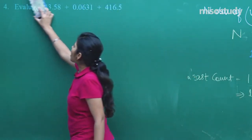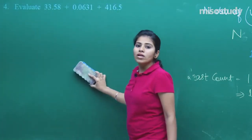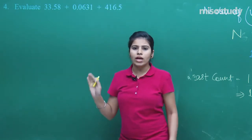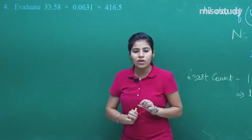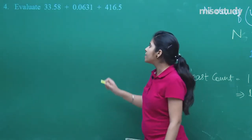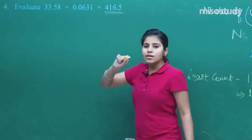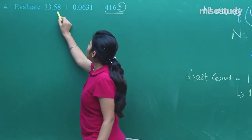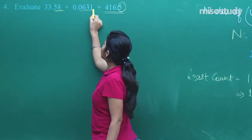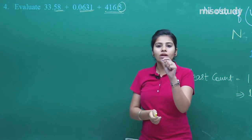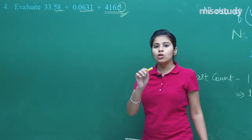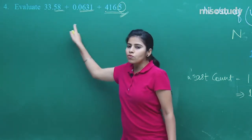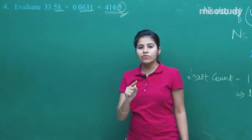Question four is related to significant figures. We need to evaluate the addition of numbers. The key challenge is that one figure has only one digit after the decimal, while others have two or four digits. We take the number with the fewest decimal places as our base, so we round all numbers to one decimal place.